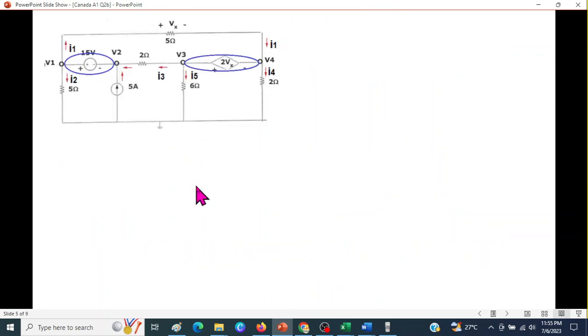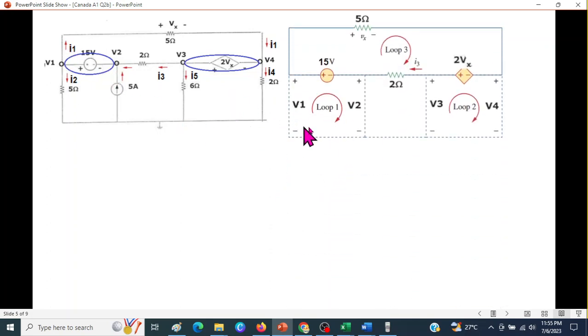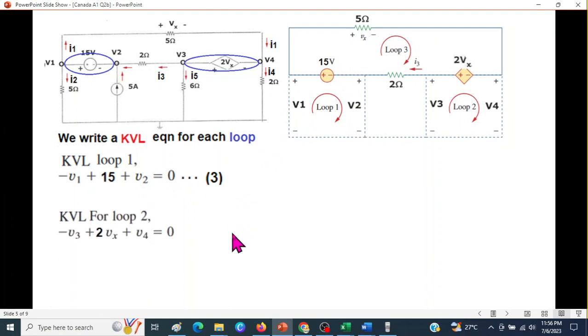Now, we have to find a couple of more equations. And for that, wherever there is a supernode, we have to write a KVL equation. For this, this is a supernode. So, we have to write a KVL equation. So, this loop, we are calling a loop 1. Similarly, this is a supernode. So, we have to write a KVL equation here. We are calling it loop 2. And the upper one also has the two supernodes. Therefore, we will also call upper one as loop 3.